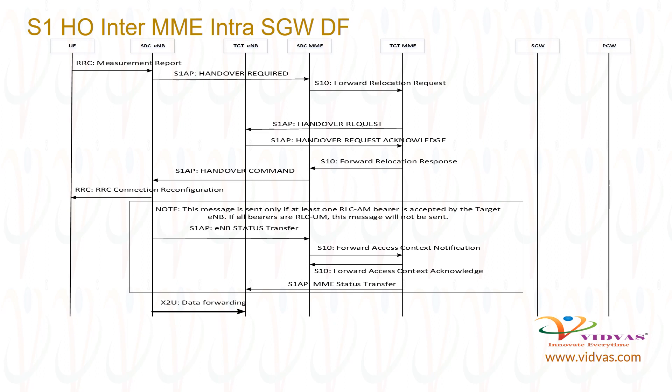Target MME sends S1AP handover request message to target ENB. Target ENB sets up the radio bearers and sends S1AP handover request acknowledge message to target MME with target ENB FTEID for downlink path.